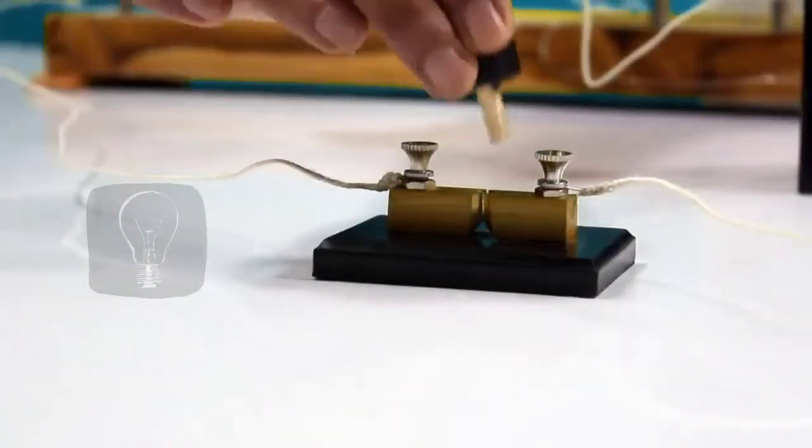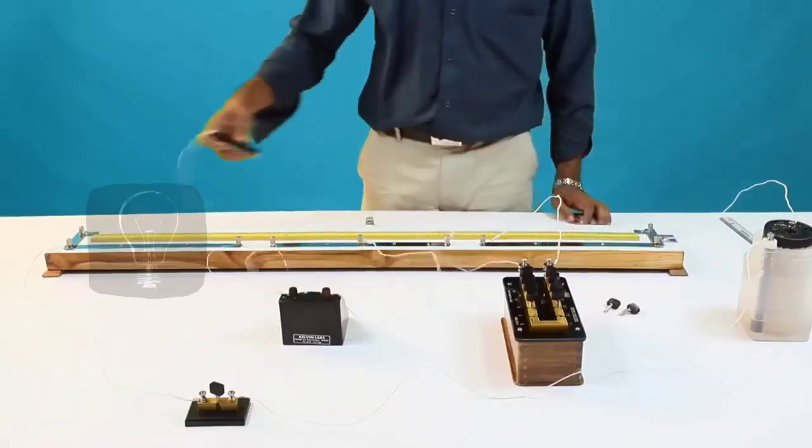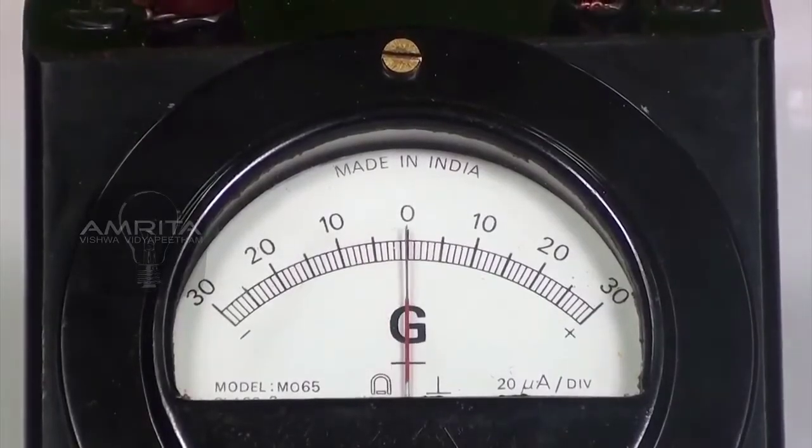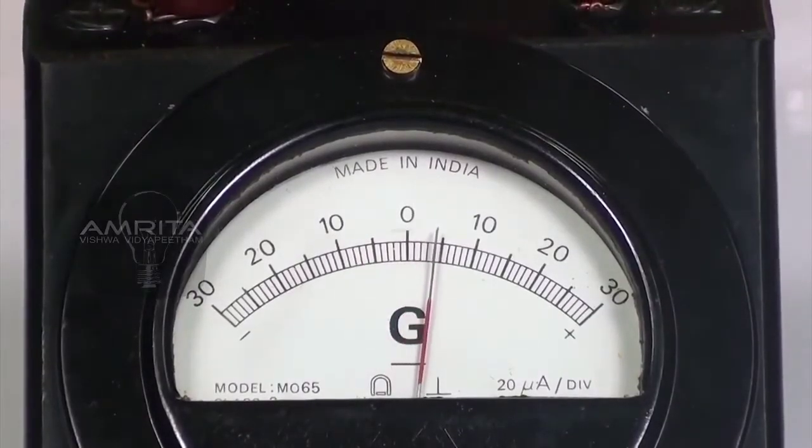Now insert the key and press the jockey near A and then near B. If the galvanometer deflections are in opposite directions, then the connections are correct.